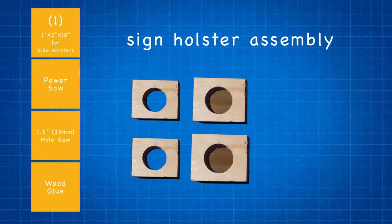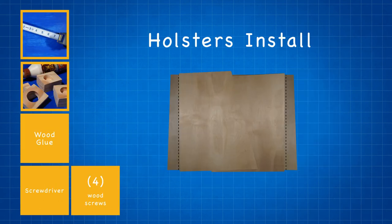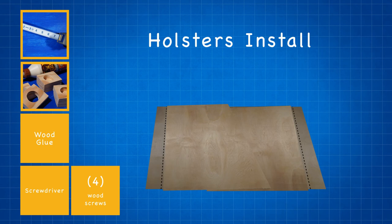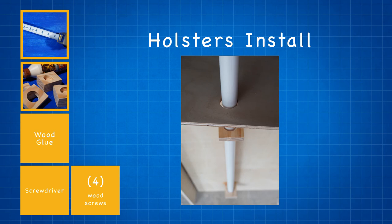Once your holsters have dried, lay the base of your stand flat. Mark a line eight inches in from the edges of the sides and six inches from the top and bottom edge. Now glue all four holster pieces to the sides as shown. Make sure that the holes line up.